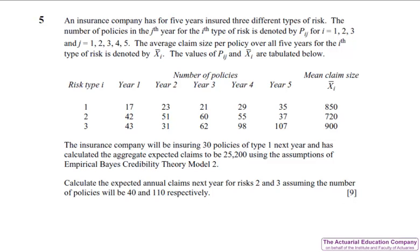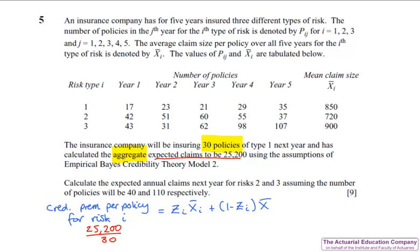Question 5 tests EBCT model 2, which has only been asked once before since its return to the syllabus in 2010. Given that nearly all the formulae are in the tables, this should have presented no problem. However, unlike the previous question, which was just a copy of the coal mining example, this requires a little bit more of an intuitive feel. Recall that the formula to calculate the credibility premium per policy for risk i is as follows. And in this question, we are told the expected claims for risk 1. And so it may have been tempting to say that this is the credibility premium for risk 1. However, this is the aggregate expected claims. And we're told that we have 30 policies. And so the credibility premium per policy for risk 1 will be this 25,200 divided by the 30 policies.